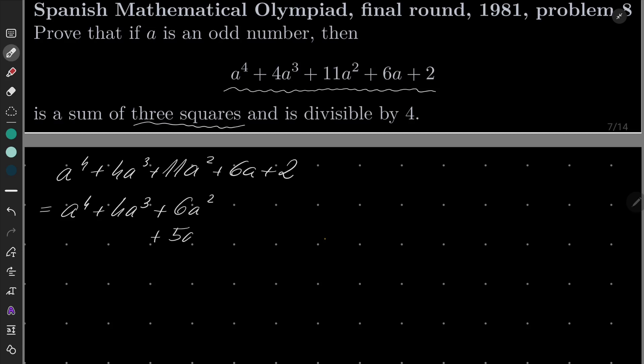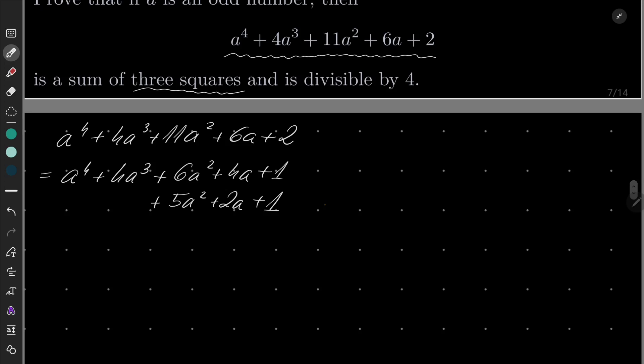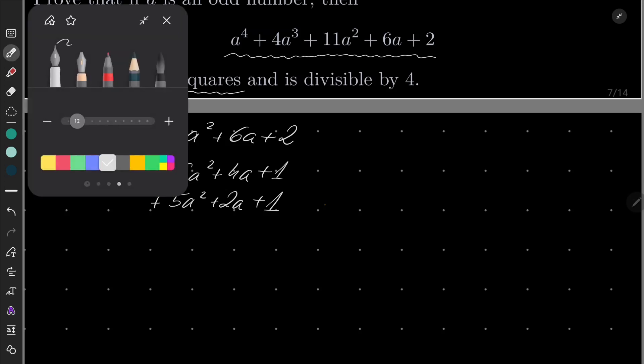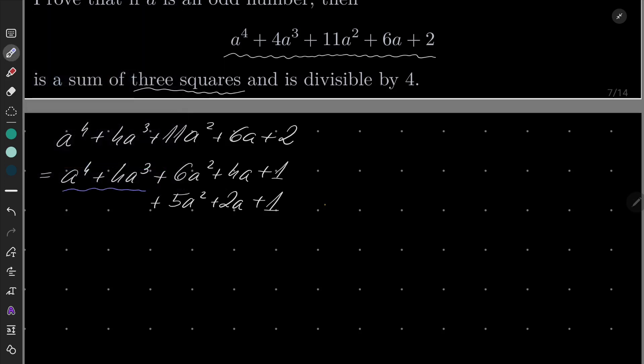and plus 5a^2. I will split 6 times a into 4a and 2a and I will split 2 into 1 plus 1. Why? Well, this part happens to be just (a+1) to the fourth power.